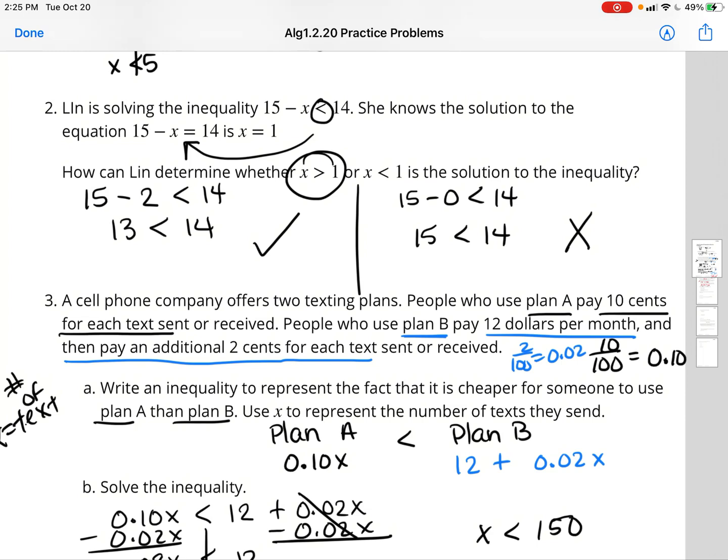But let's also look at x is less than 1. A number less than 1 is 0. 15 minus 0, is that less than 14? Well, 15 minus 0 is 15. 15 is not less than 14. So her final answer should be x is greater than 1.